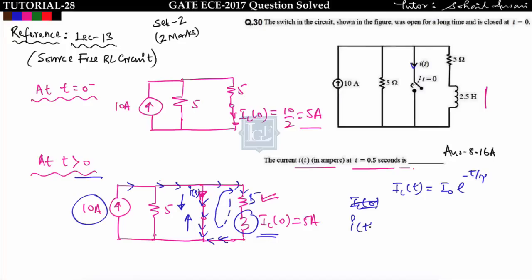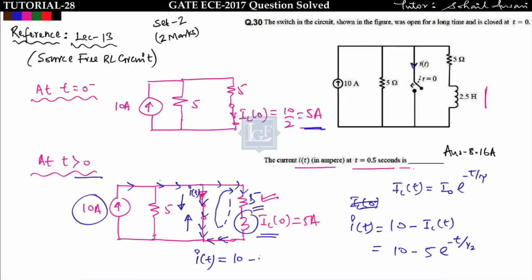The inductor current i_L(t) equals I_0 * e to the power minus t upon tau, flowing in the upward direction. The total current i(t) equals 10 minus i_L(t), since 10 amperes flows downward and i_L(t) flows upward. With I_0 equals 5 and tau equals L/R equals 2.5/5 equals 1/2, we get i(t) equals 10 minus 5*e to the power minus 2t. At t equals 0.5, i(t) equals 8.16 amperes.